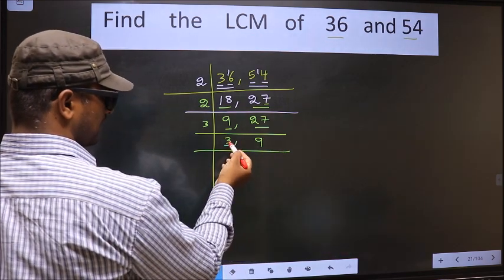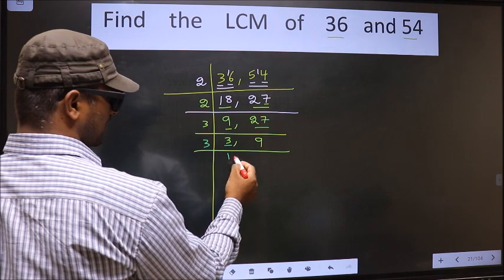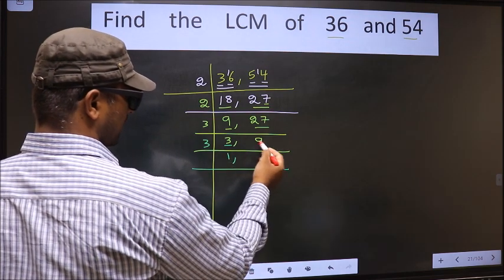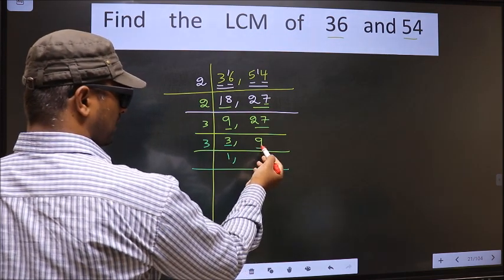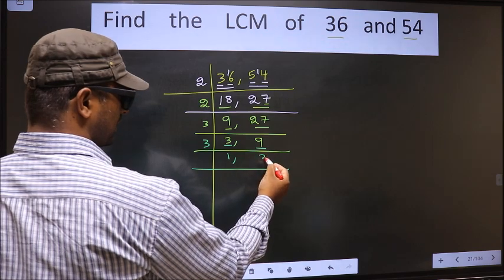Now we have 3 here, 3 is a prime number, so 3, 1's, 3. The other number, 9. When do we get 9 in 3 table? 3, 3's, 9.